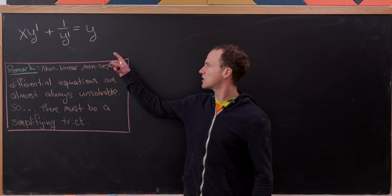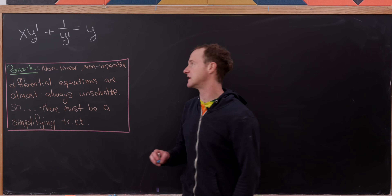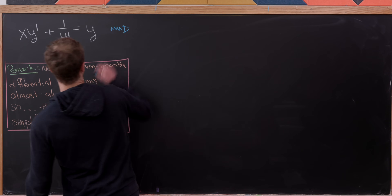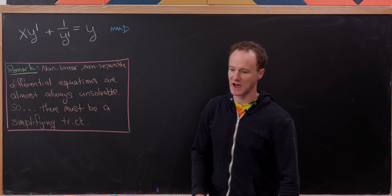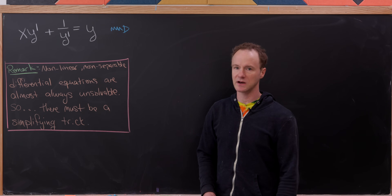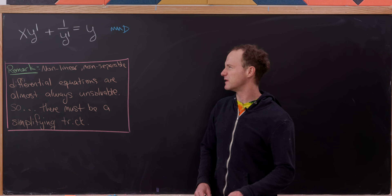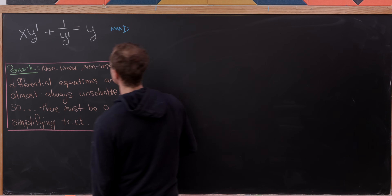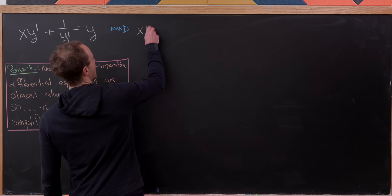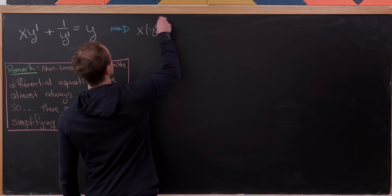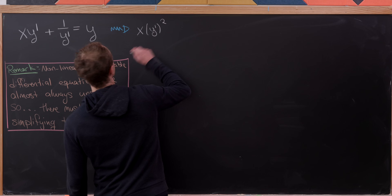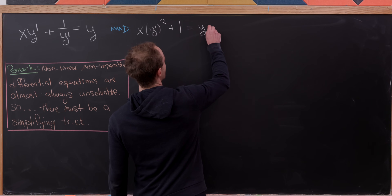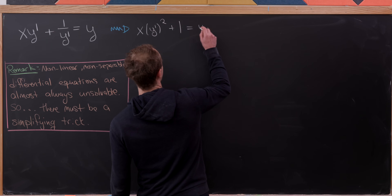I'm going to start by clearing the denominator. I don't think this is strictly necessary, but I think clearing the denominator is a nice way to do it. That's going to give us x times y prime squared plus 1 equals y times y prime.